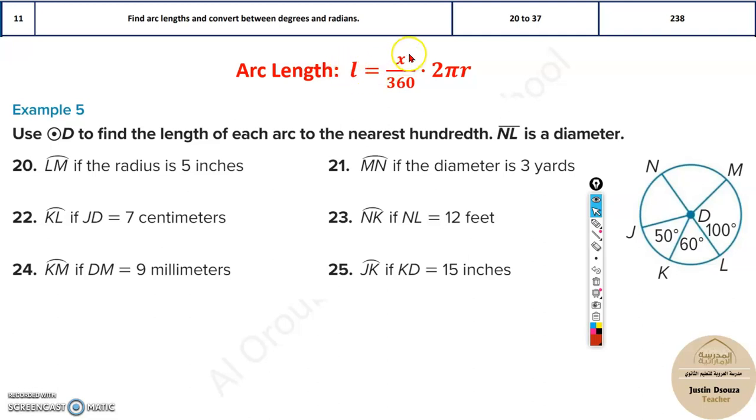L equals, that's the arc length, is equal to x over 360 times 2πr, where x is the part of the angle which is known. For example, if you want to find this arc over here with 50 degrees, x will be 50. So this arc can be found out with that.